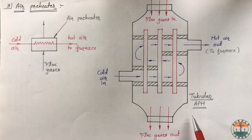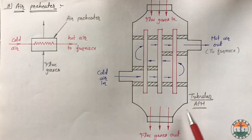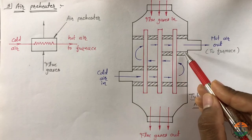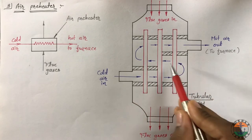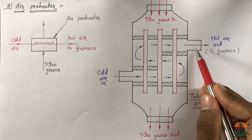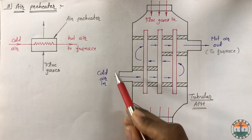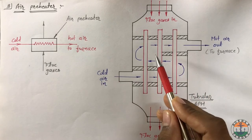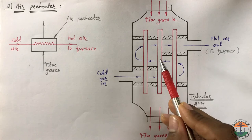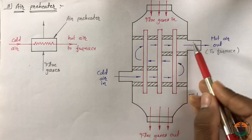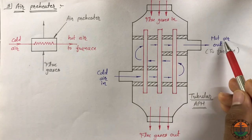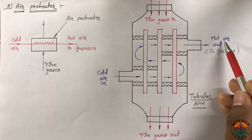Tubular air preheater is shown here, in which flue gases flow through these tubes and air flows in zigzag manner around them. Cold air is supplied and some amount of heat from exhaust gases is recovered. Heated air is then supplied to the furnace for combustion of fuel.